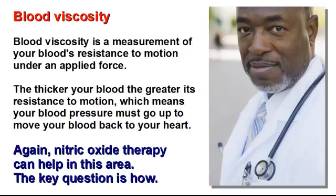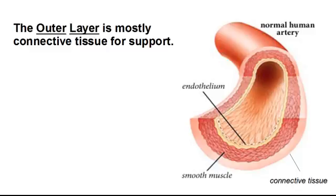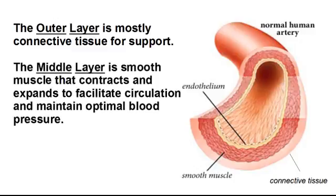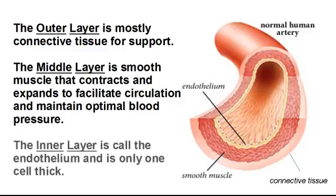The key question is how. As you can see by the slide, your arteries are made up of three layers. The outer layer is mostly connective tissue to provide support. The middle layer is smooth muscle, which contracts and expands to regulate circulation and maintain optimal blood pressure. The inner layer is called the endothelium. This tissue is only one cell thick, but it protects the integrity of the entire cardiovascular system through a wide range of biochemical actions, one of which is the production of a gas called nitric oxide.